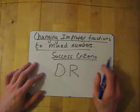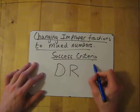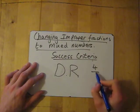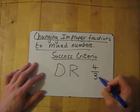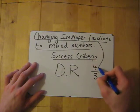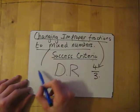An improper fraction is where the top is worth more than the bottom of the fraction. For example, 4 over 3, where the top is worth more than the bottom. A mixed number